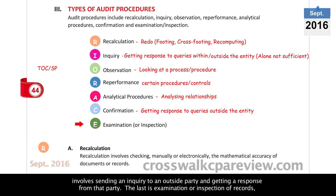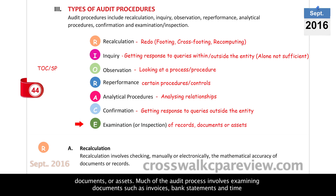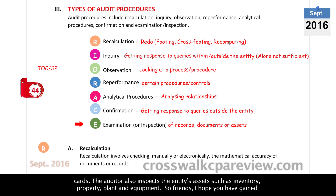The last procedure is examination or inspection of records, documents, or assets. Much of the audit process involves examining documents such as invoices, bank statements, and timecards. The auditor also inspects the entity's assets such as inventory, property, plant, and equipment.